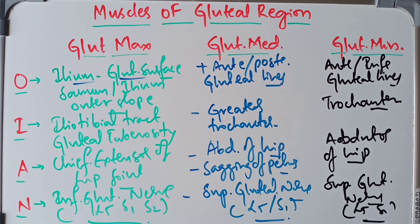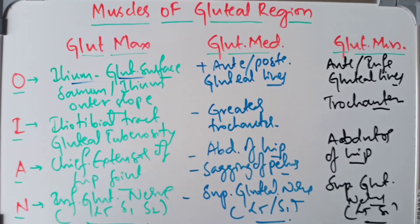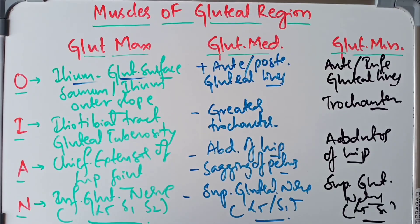That covers the origin, insertion, action, and nerve supply of the gluteus maximus, gluteus medius, and gluteus minimus. Thank you for watching. Please make sure to watch part two of this video, which covers the remaining muscles of the gluteal region including the gemella superior, inferior, and others.